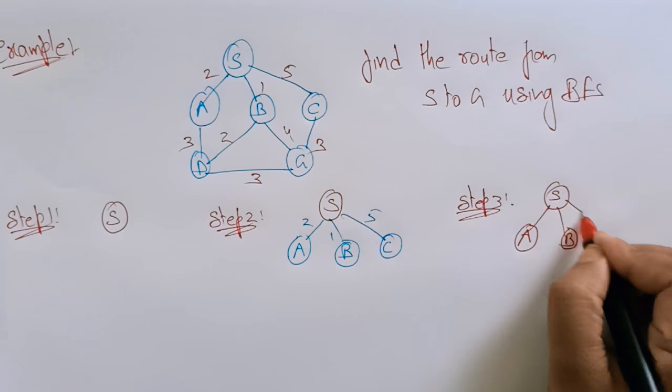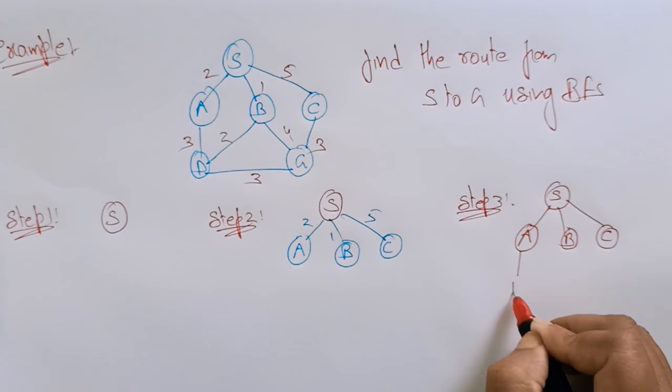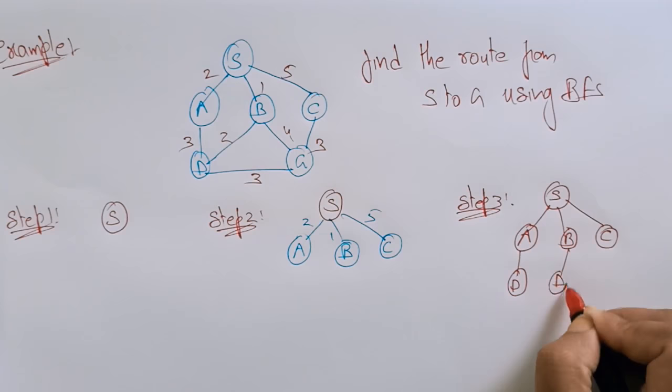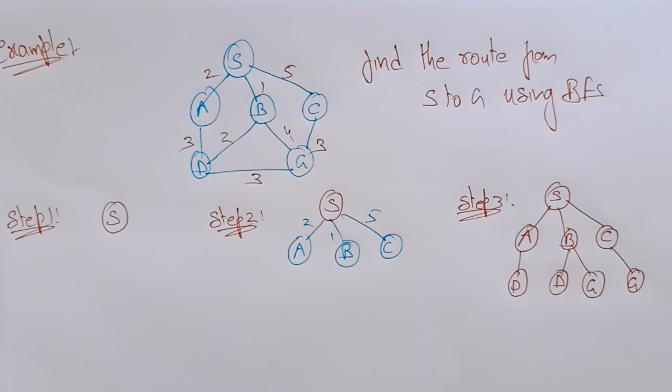And again in the next level, A's successors are D, and B's successors are D and G, and C is connected to G. I still need to expand it, it is not completed.